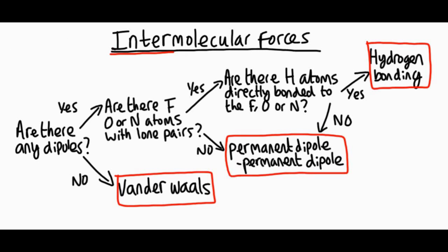Let's take the example of water. You may already know that water molecules are attracted by hydrogen bonding, but let's confirm why. Do we have F, O, or N atoms with lone pairs? Yes. Are the hydrogen atoms directly bonded to F, O, or N? Yes. So we get hydrogen bonding acting between the delta plus hydrogens and the lone pairs on oxygen.